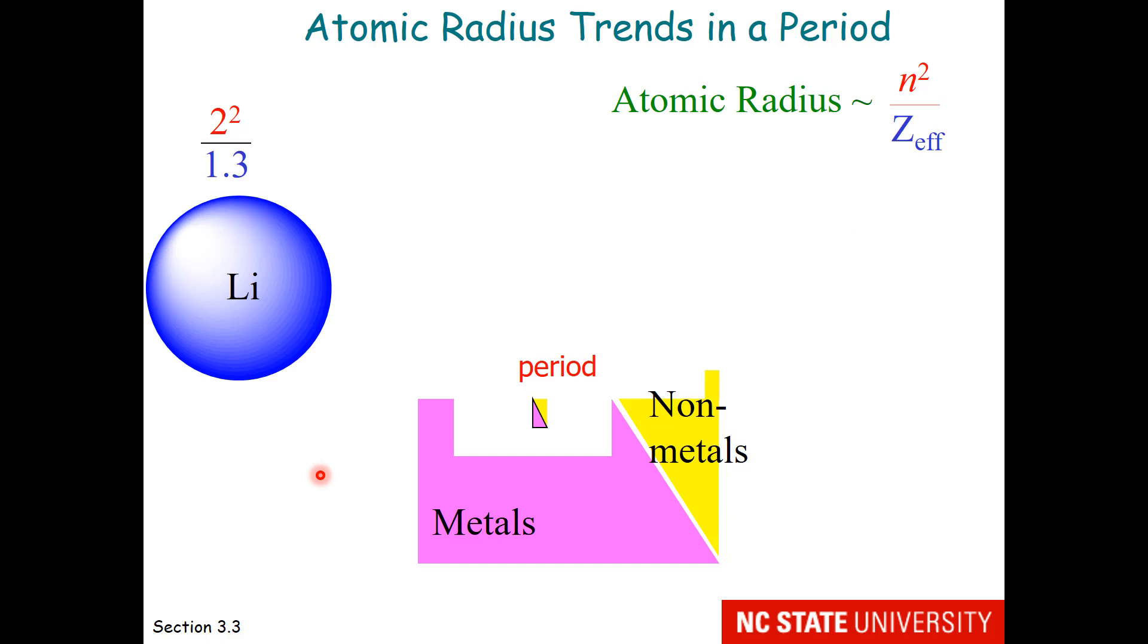Students are not required to memorize the z-effective numbers, merely the trends. If we go across the second period, n-squared is going to remain the same. It will be 2. But what does z-effective do as you go from left to right across a period?